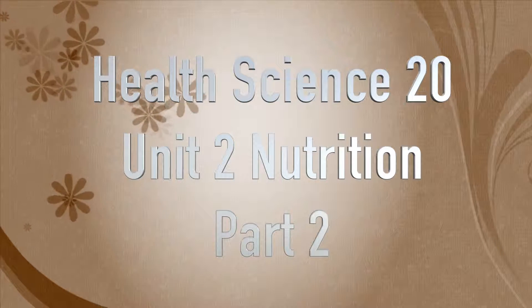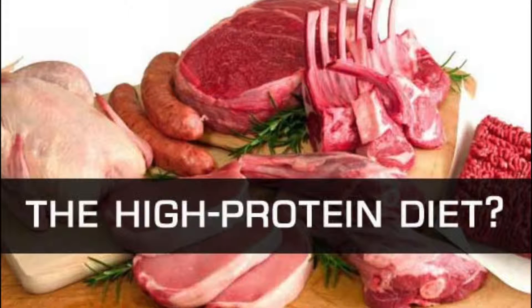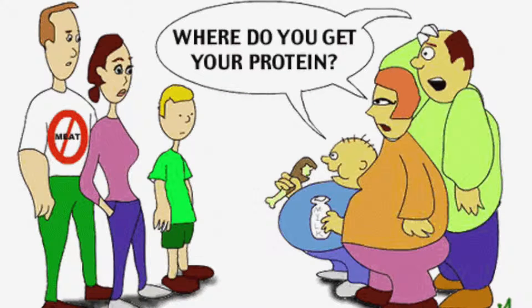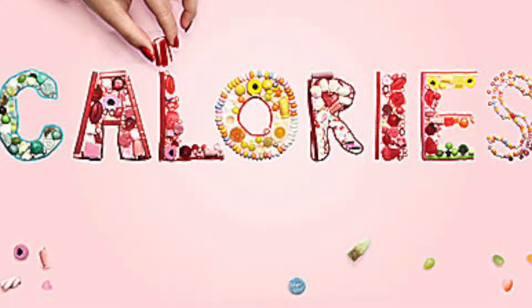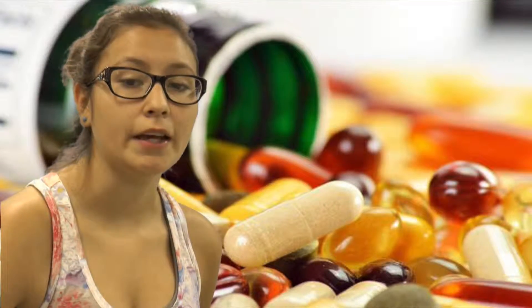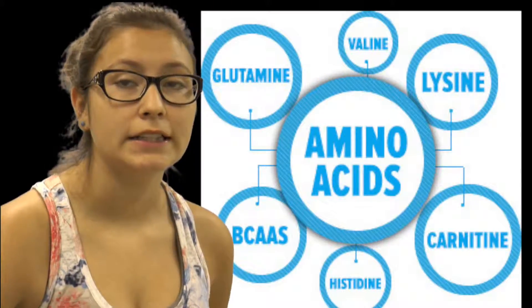Health Science 20, Unit 2: Nutrition, Part 2. Some diets you could follow include high-protein diets — eating protein after an injury is important because potential muscle breakdown can offset your protein levels. Since meat is a key protein source, vegetarians may have a harder time. Another option is a high-carb diet, which supplies sufficient calories, though consider cutting back after a week or two.